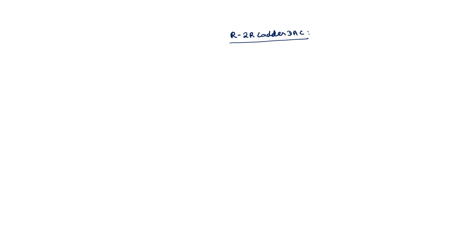If we take the circuit diagram of this R2R ladder DAC, we can see there is a current to voltage converter similar to the weighted resistor type.